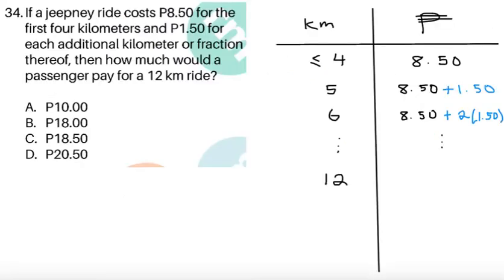For item 34, if a jeepney ride costs 8.50 pesos for the first 4 kilometers and 1.50 pesos for each additional kilometer or fraction thereof. Meaning, if you just traveled half a kilometer, it's going to add half of 1.50 pesos. So given this condition, then how much would a passenger pay for a 12-kilometer ride? And we can try to list it down using a table. If we have the kilometers or the distance less than or equal to 4, it's going to be 8.50. And then since we're paying an additional of 1.50 per kilometer, we can see the pattern here.